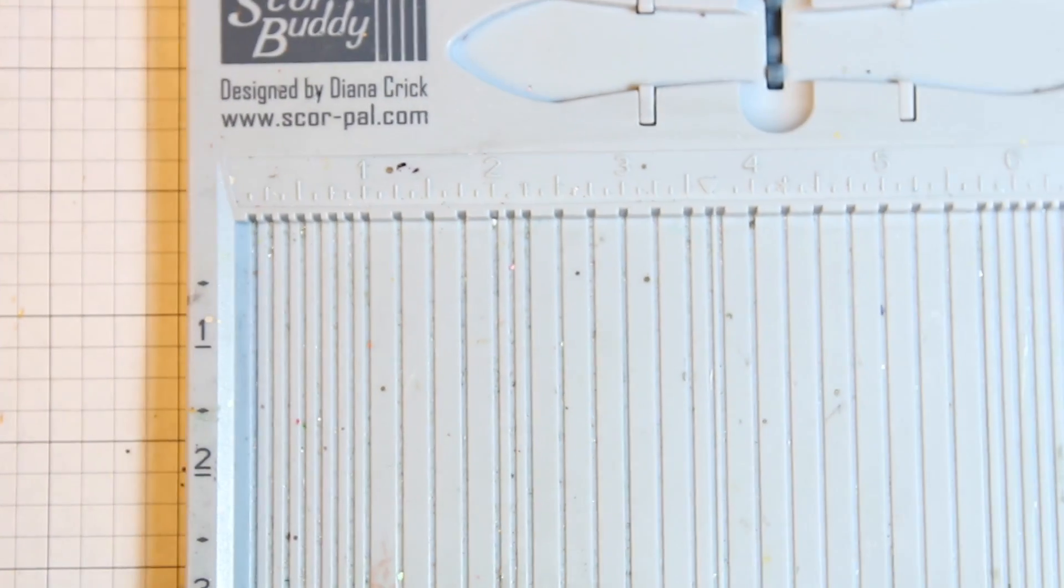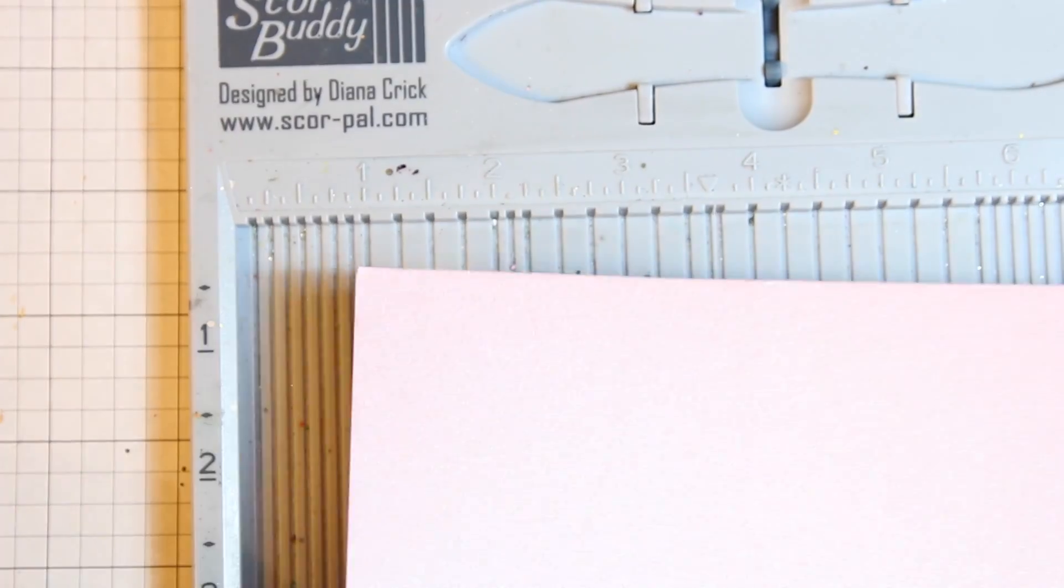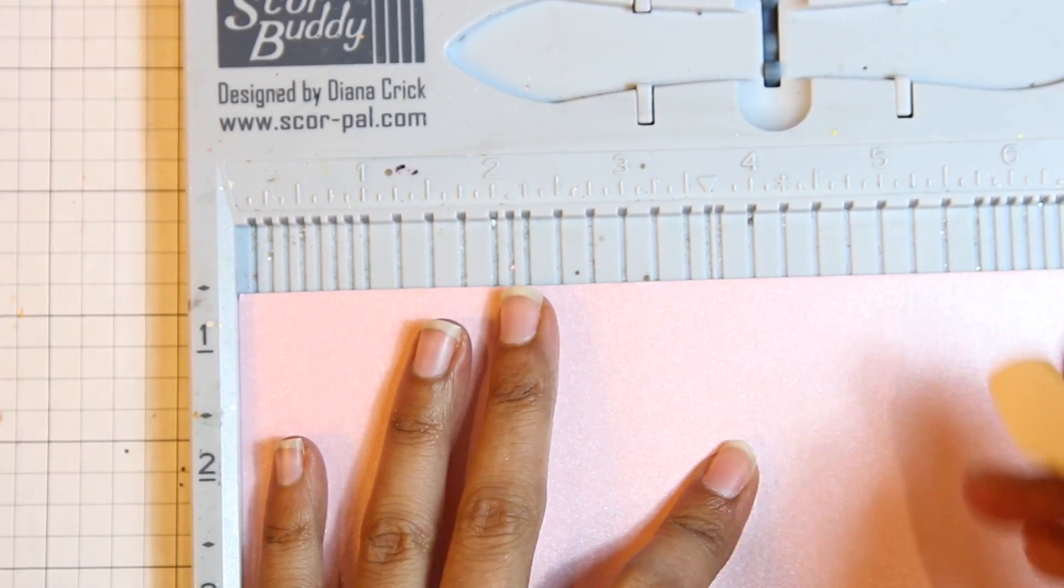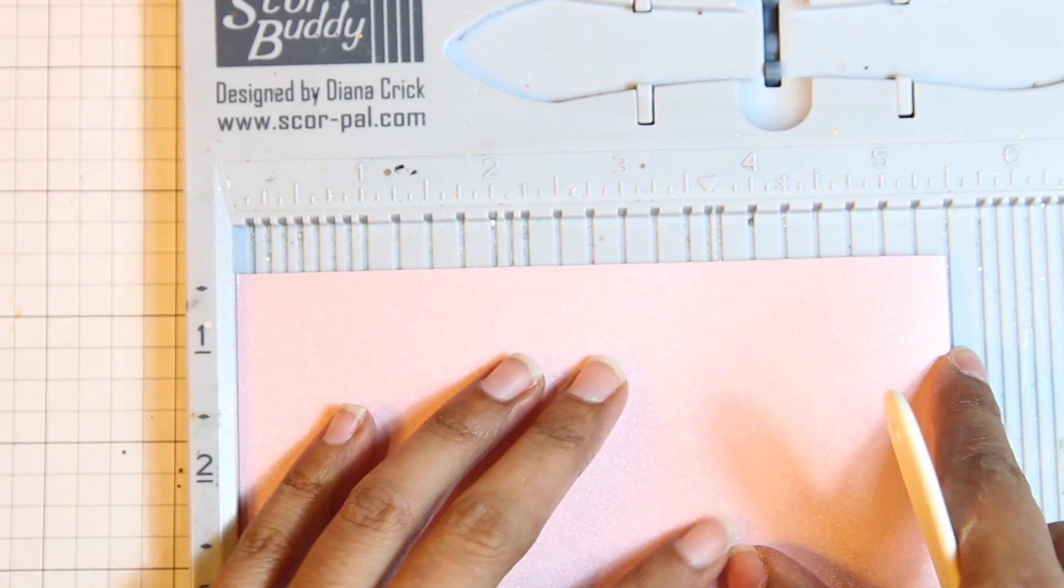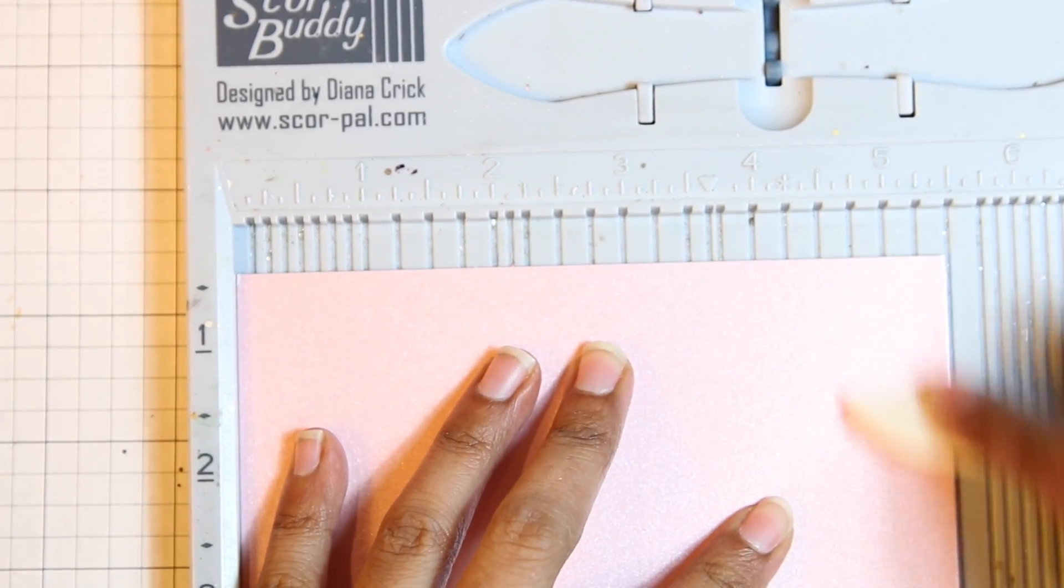Next I'm going to be scoring the card base at 5 1⁄2 inches using my score buddy, and then I'm going to be folding the card and creasing the fold using my scoring tool. You can see me just preparing the card base by butting it up against the edge of the score buddy and creasing my fold.